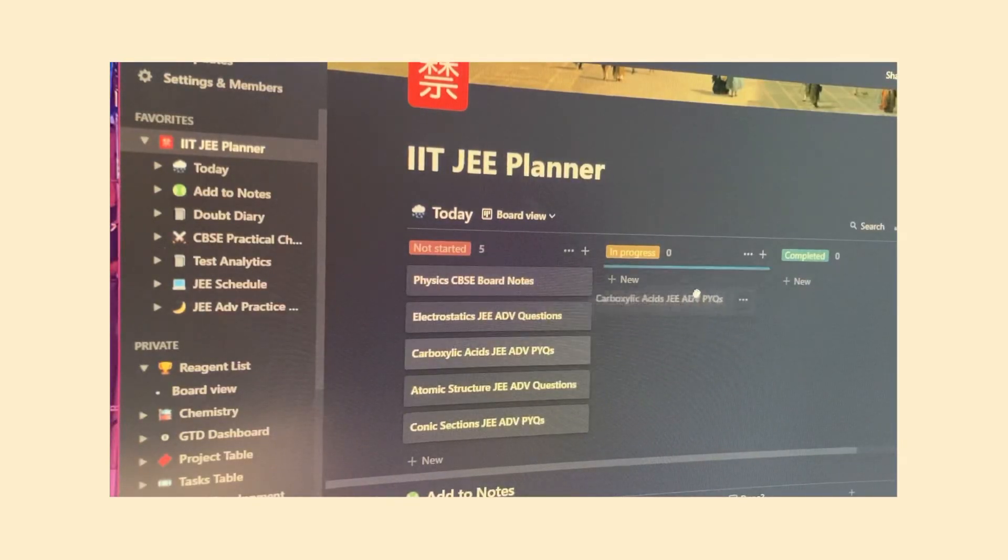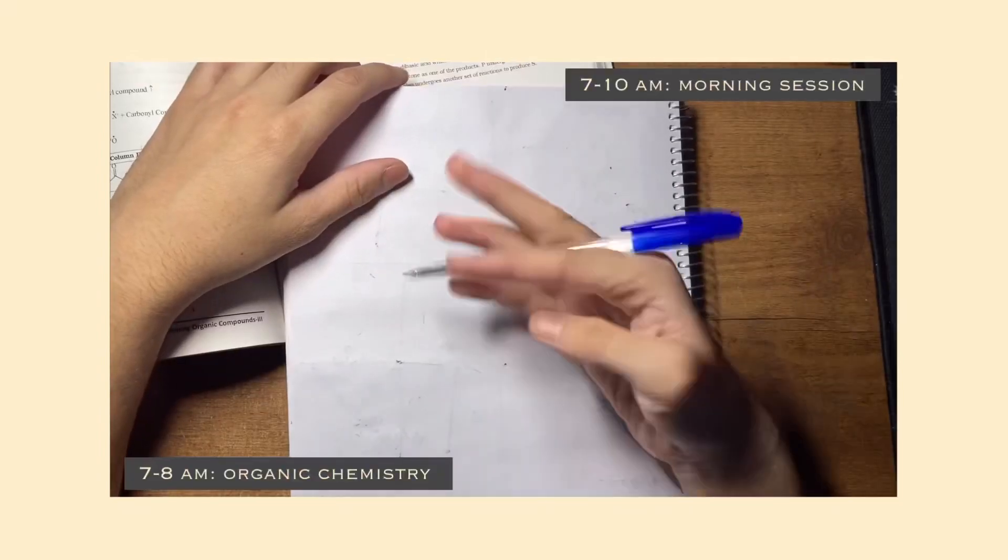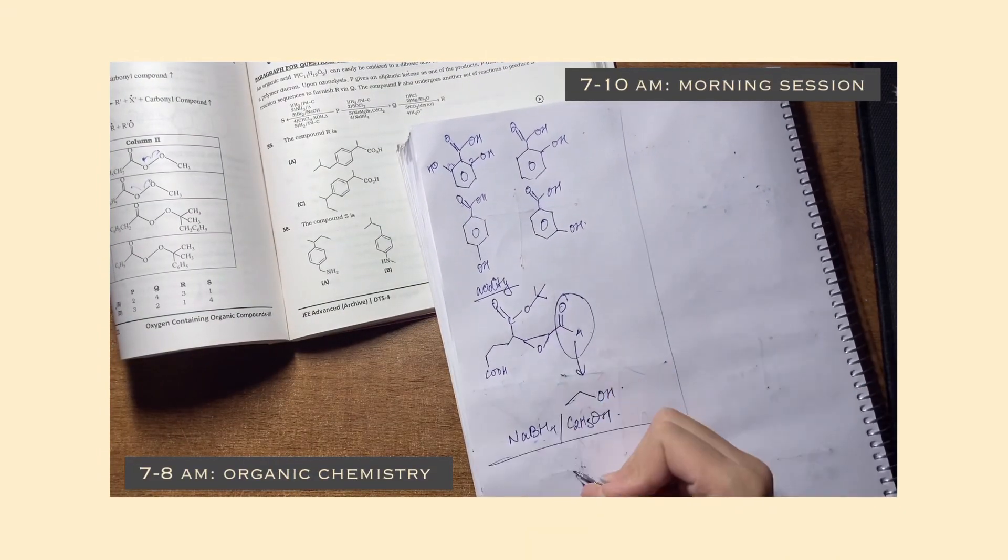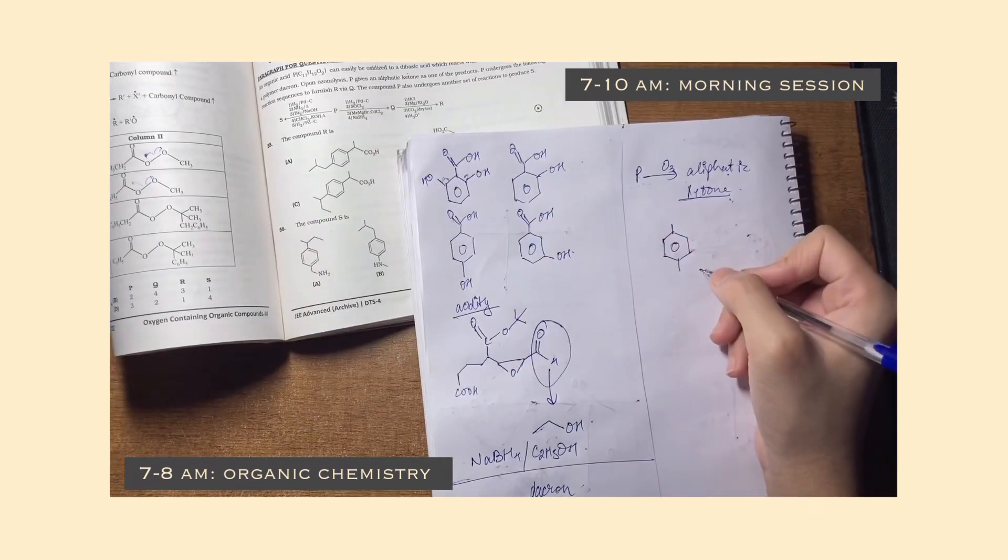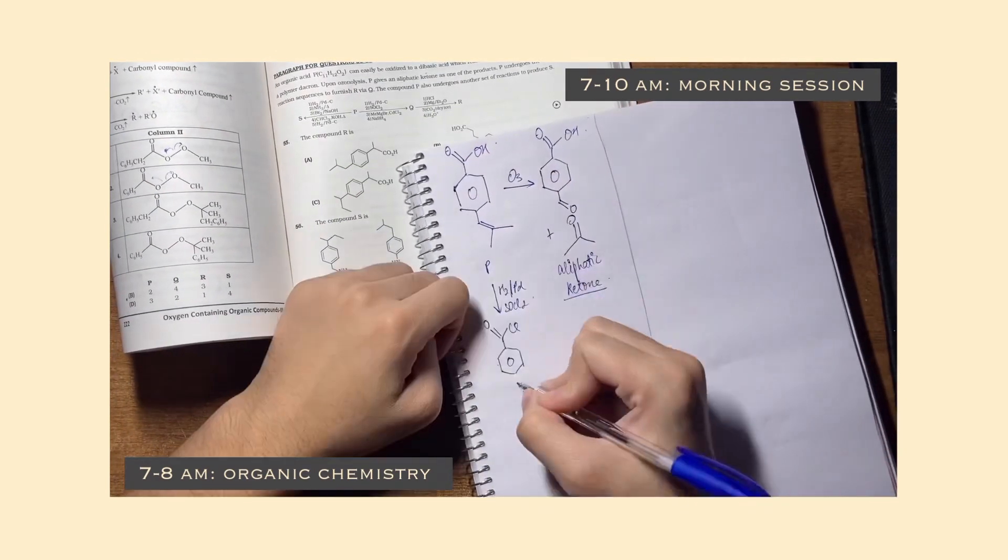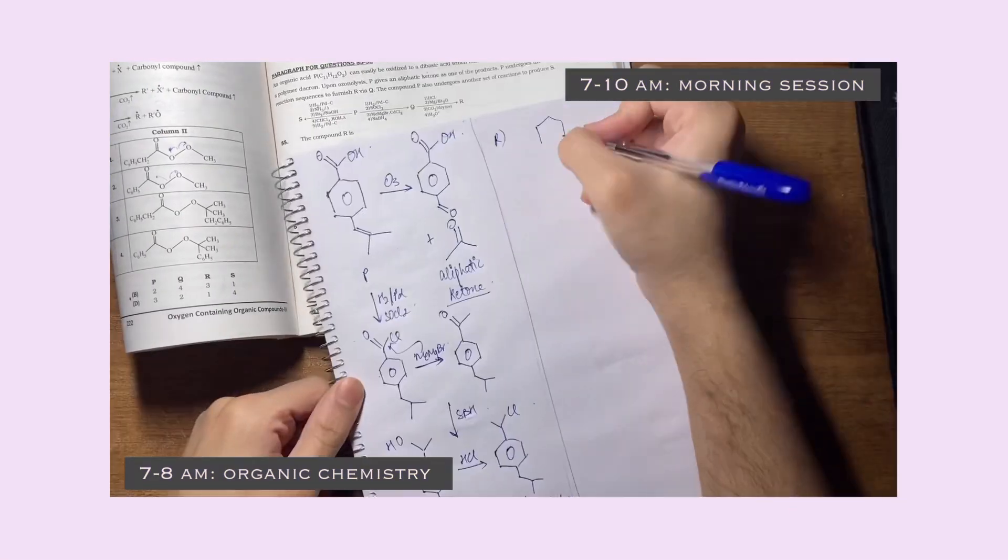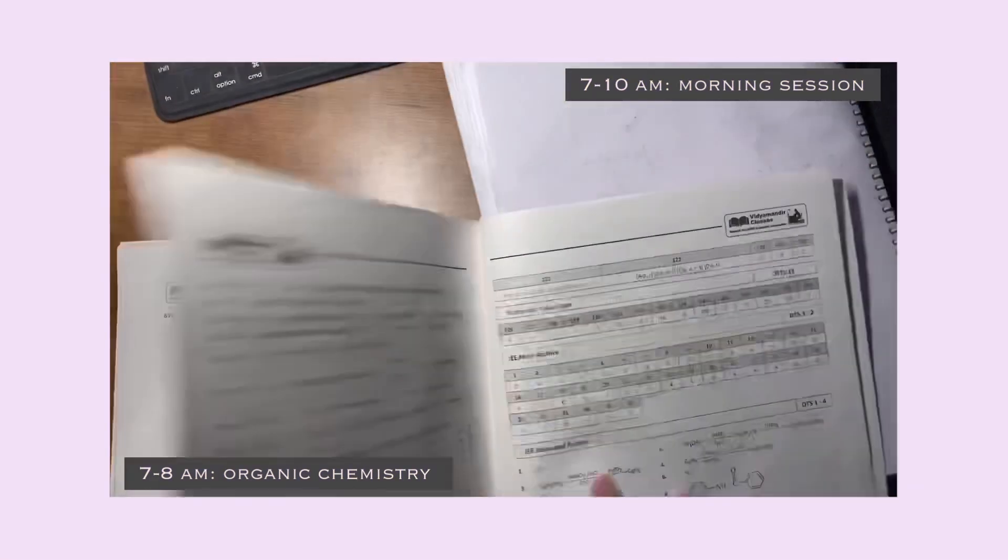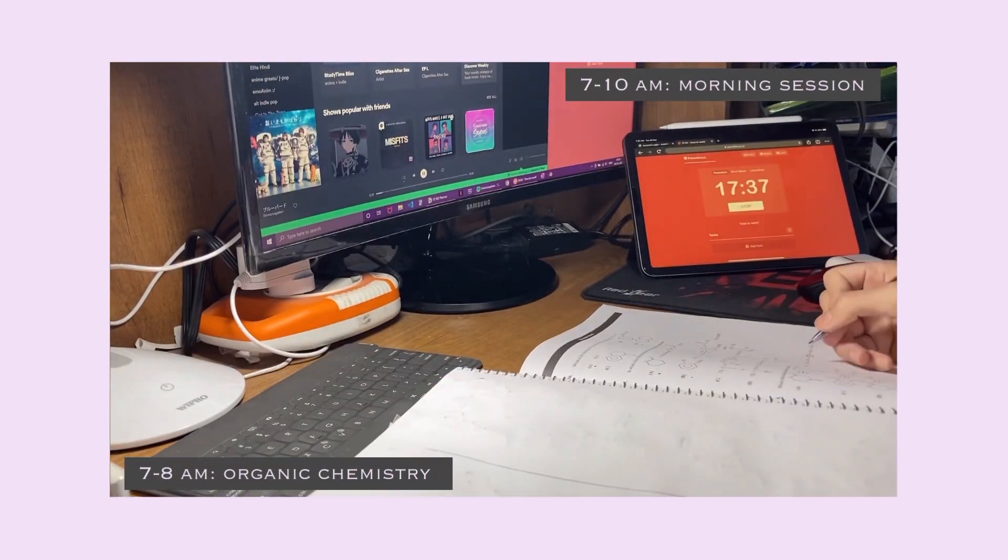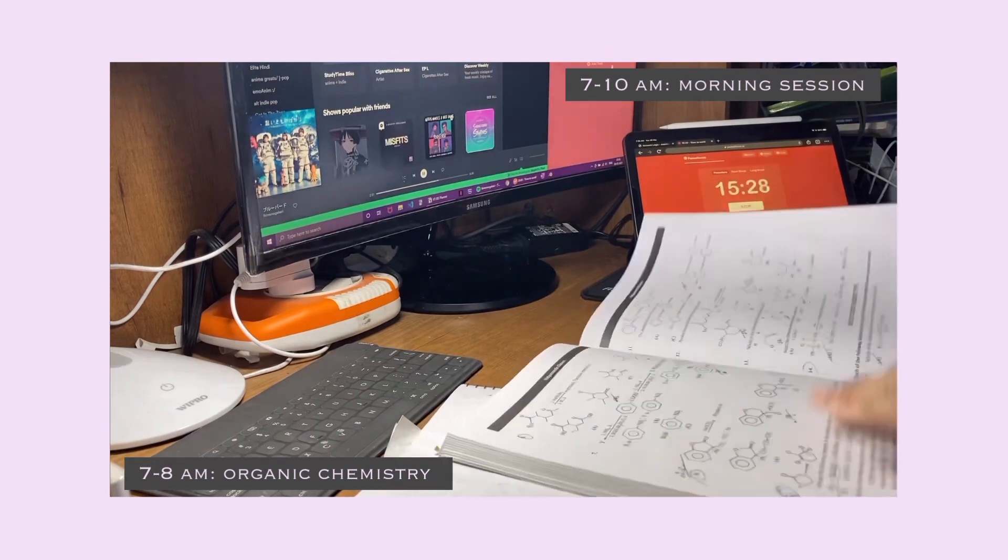My first study session is from 7am till 10am and I use a Pomodoro technique where after every 50 minutes of studying, I take a 10 minute break. Ever since I started following this technique, I've been able to study for longer than I could before. I start my day with Organic Chemistry as it is my favorite subject, but also because Maths and Physics have tough problems I really like to solve so early morning.